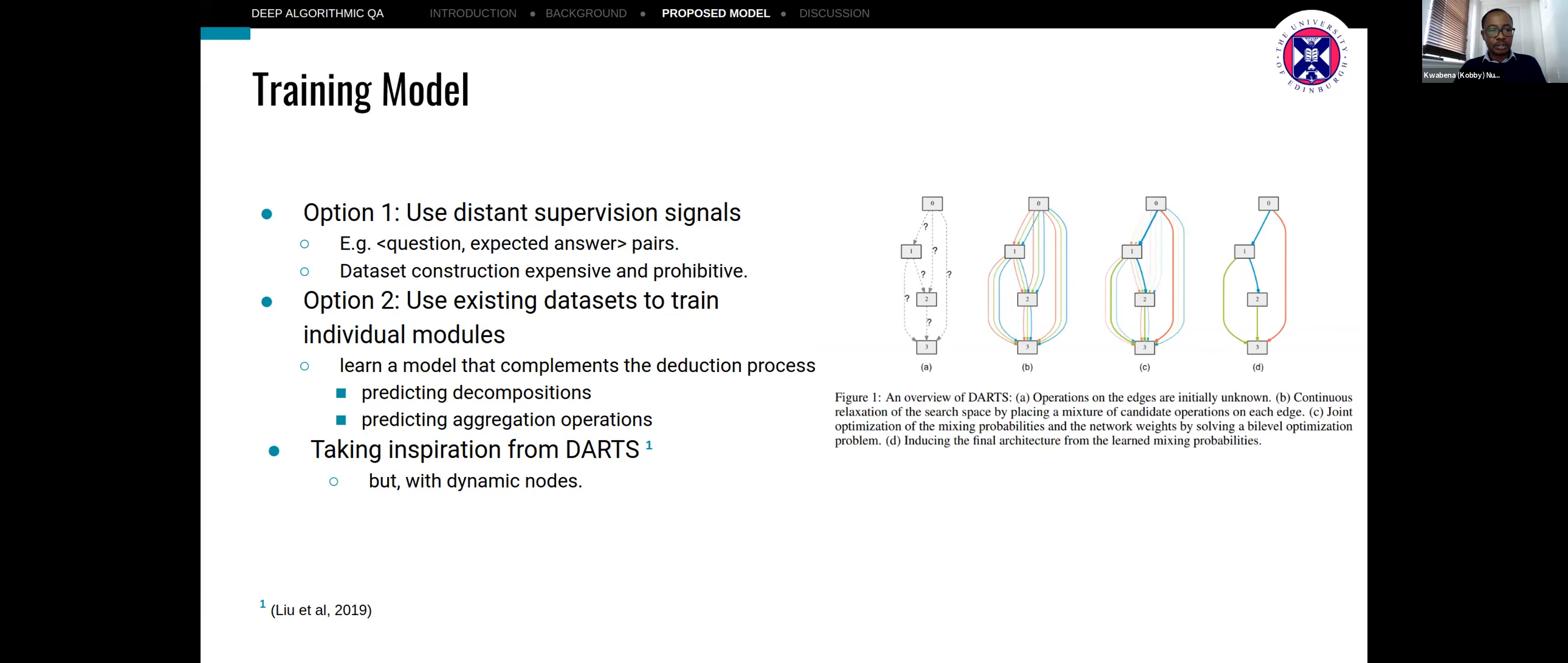Training the model would require two possible options. One is to train the whole model as a pool using some kind of distance supervision signals from the question or answer pairs. But this is quite difficult to do and expensive to generate datasets for it. Another option is to use existing datasets to train individual components of the model.